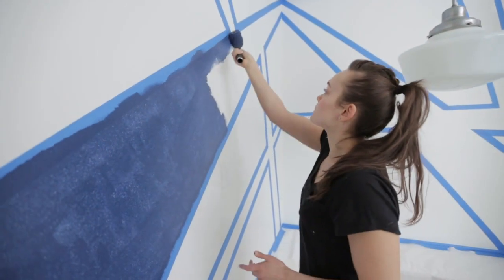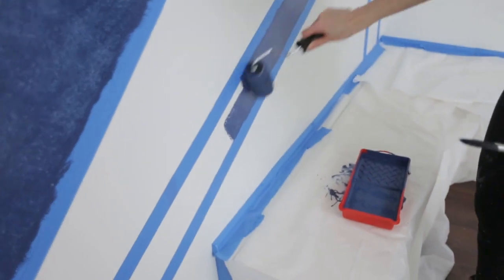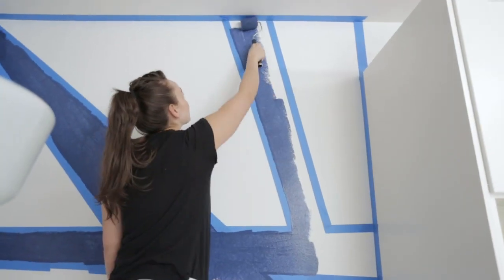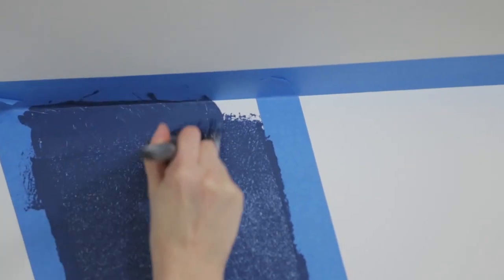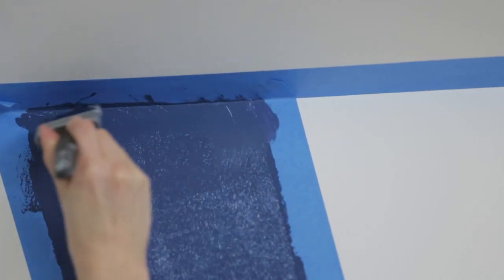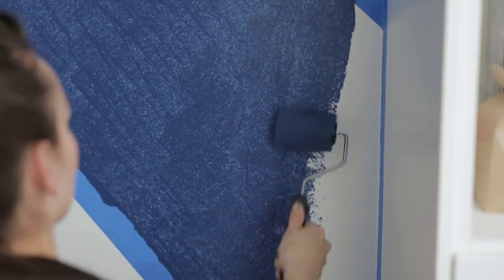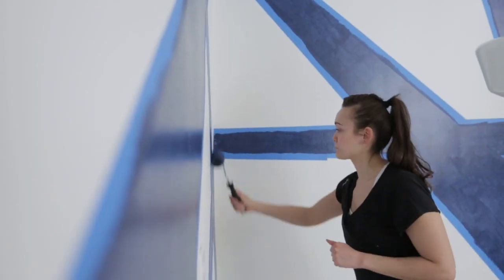Because I used the wider painter's tape, I found I was able to roll on my paint really quickly without having to be too careful along the edges. I like that I didn't have to worry about how my roller hit the tape, because I knew at the end I would have a nice clean line.